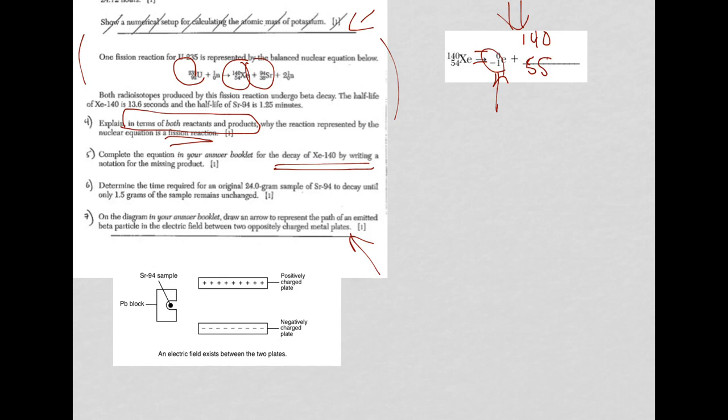We need the identity of element 55, because remember, an atom's identity is based on atomic number only. And you look it up, and it's cesium. So there's your answer.